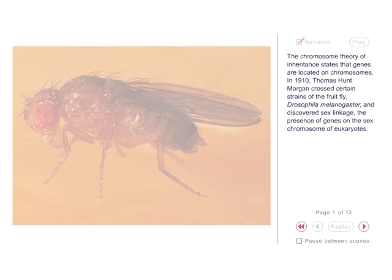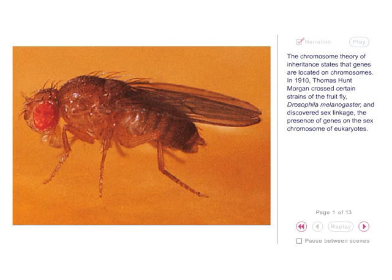The chromosome theory of inheritance states that genes are located on chromosomes. In 1910, Thomas Hunt Morgan crossed certain strains of the fruit fly, Drosophila melanogaster, and discovered sex linkage — the presence of genes on the sex chromosome of eukaryotes.